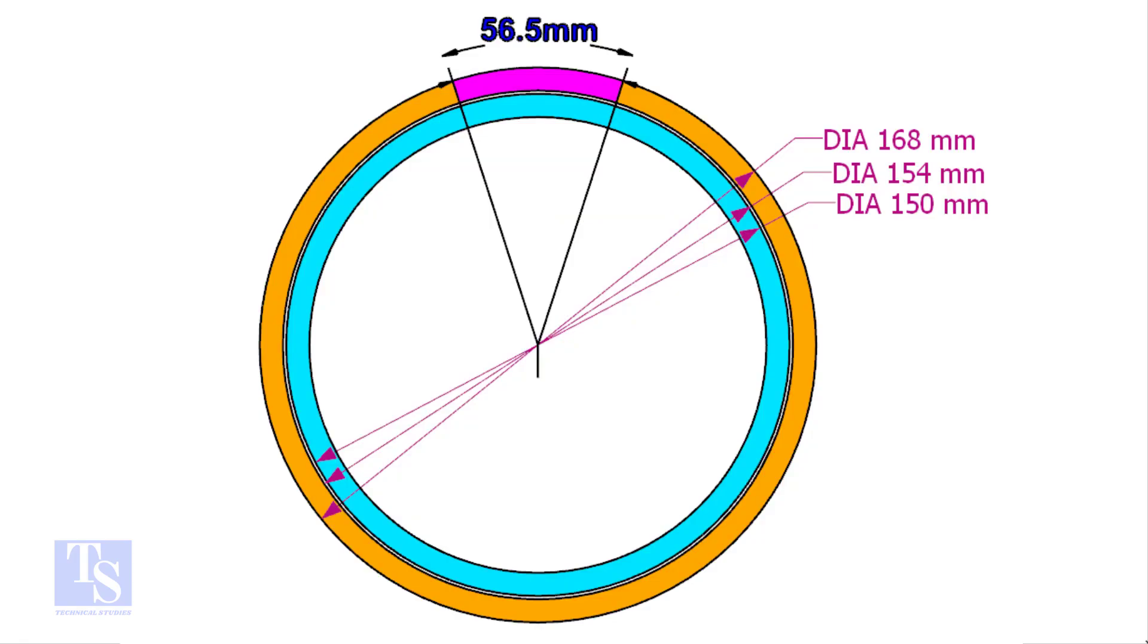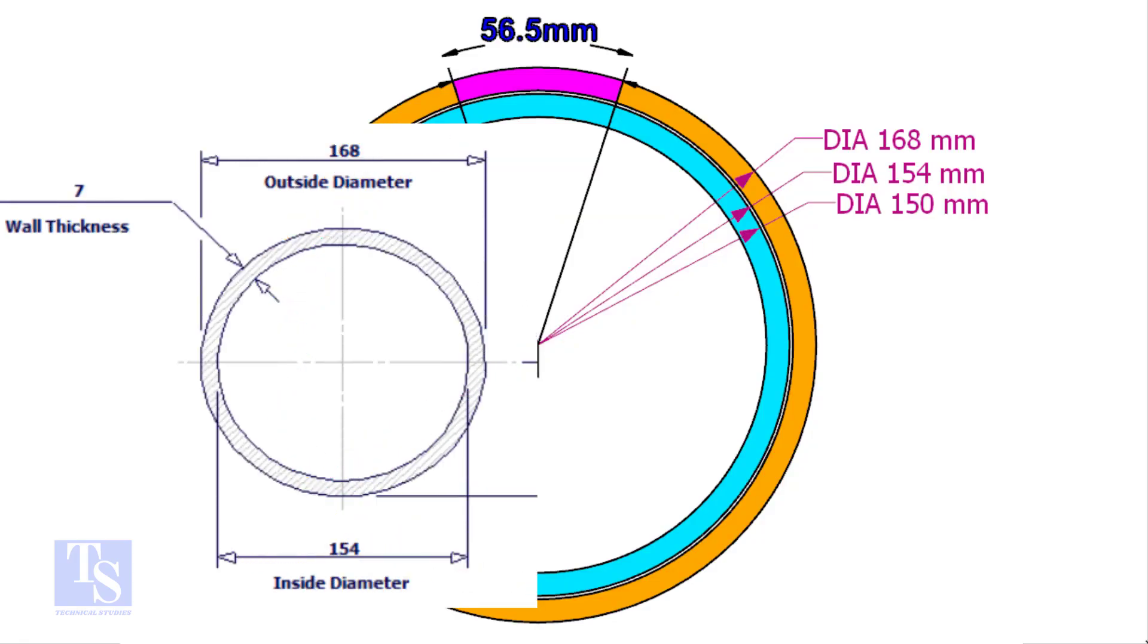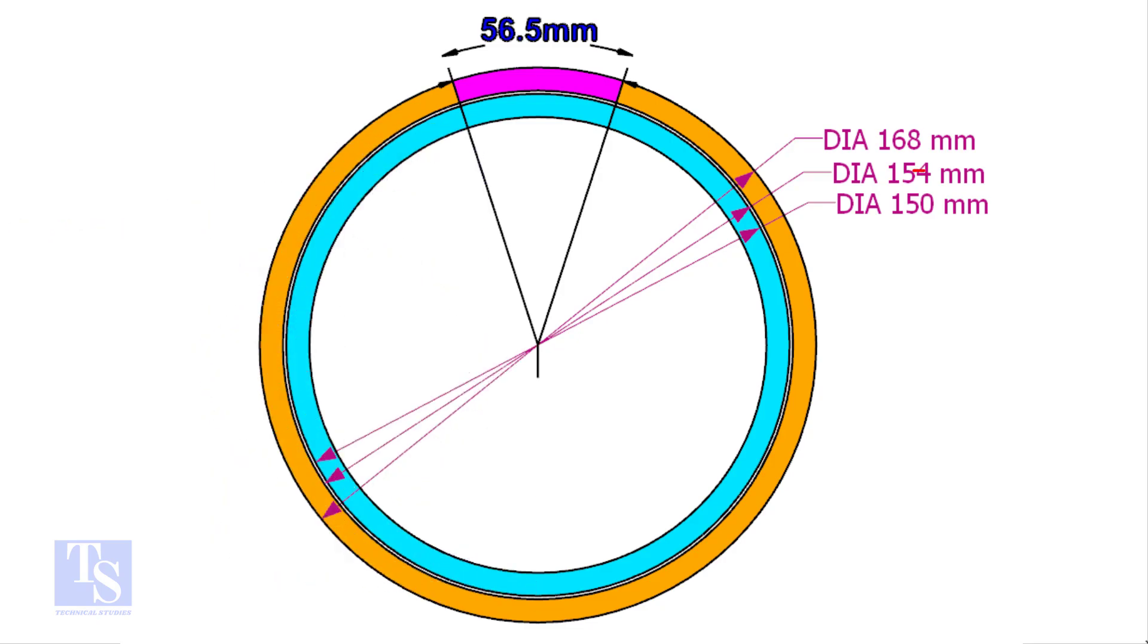This is how I cut the clamp pipe. The ID of a 6 inch schedule 40 pipe is 154mm. The OD of the clamp shall be 4 to 5mm less than the pipe ID. This clamp OD is 4mm smaller than the ID of the 6 inch pipe.